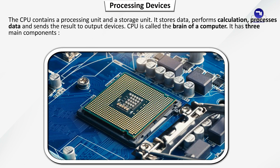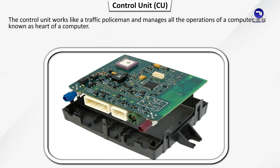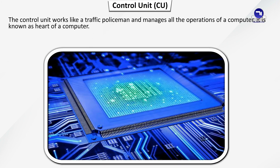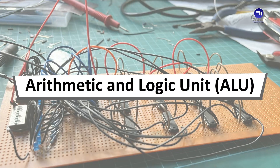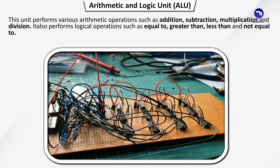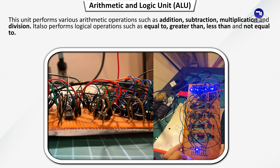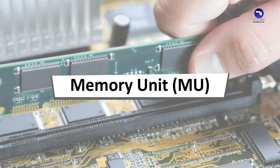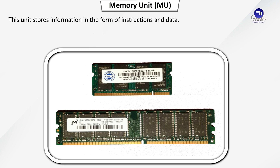The CPU has 3 main components. The Control Unit works like a traffic policeman and manages all the operations of a computer. It is known as the heart of a computer. The Arithmetic and Logic Unit performs arithmetic operations such as addition, subtraction, multiplication and division. It also performs logical operations such as equal to, greater than, less than and not equal to. The Memory Unit stores information in the form of instructions and data.